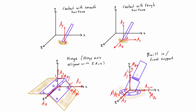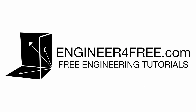So the fixed support provides all six reaction components — three force and three couple components — whereas simpler connections like smooth surface contact provide only one force component and no couples. I wanted to introduce these different connection types that you'll see in upcoming videos and in other statics problems. Thanks for watching, and we'll start with an example in the next video.